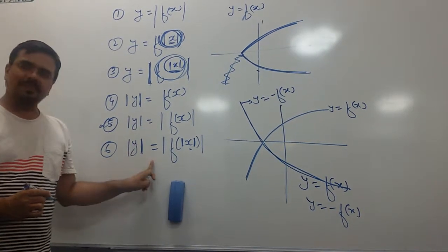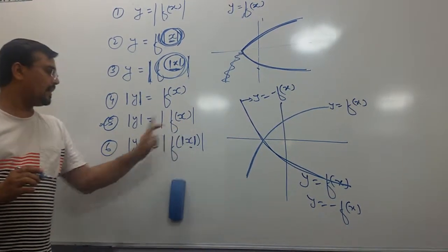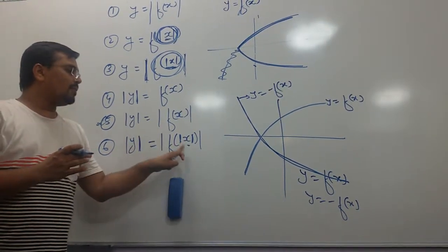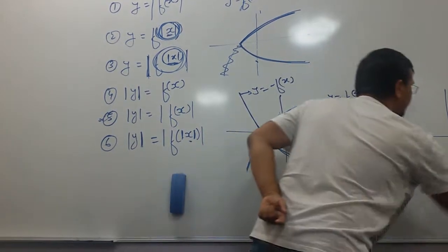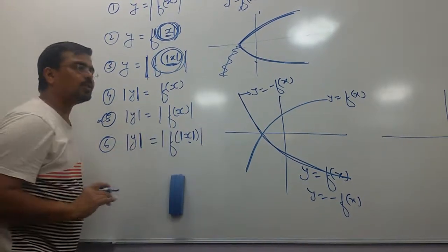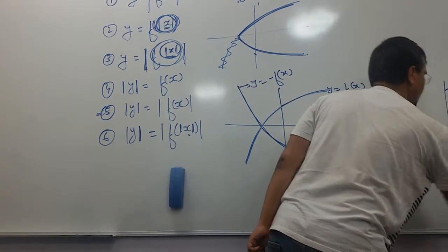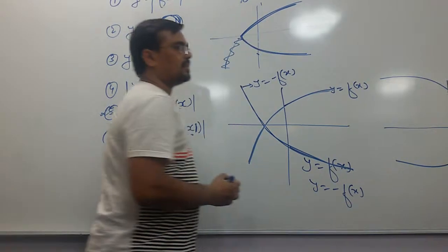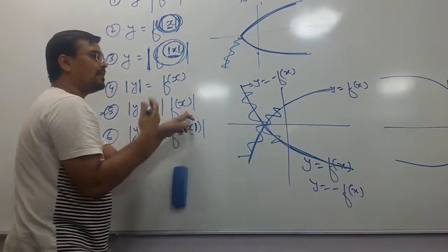Number 6 is the extension of number 5. In number 5, x can be positive or negative. In number 6, it is absolute value of x, meaning even for positive or negative x, the whole graph follows the positive x pattern. Whether x is positive or negative, the whole function follows the positive x pattern. So I rejected the negative x part from number 5, and the graph on the right side of y is mirrored to the left side.